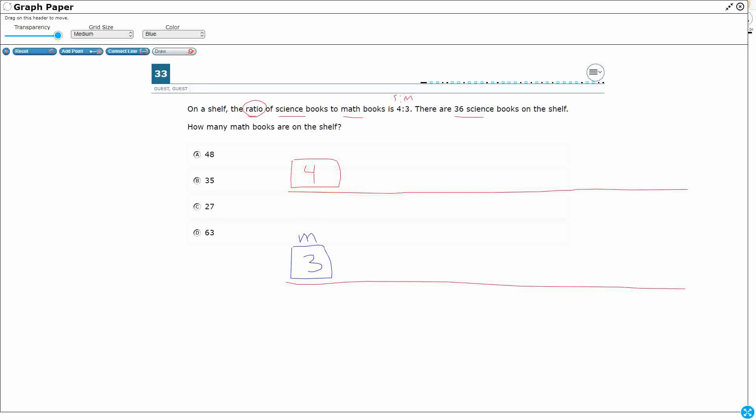So here's my math books, and here are my science books. So this kind of represents my ratio, 4 science to 3 math.